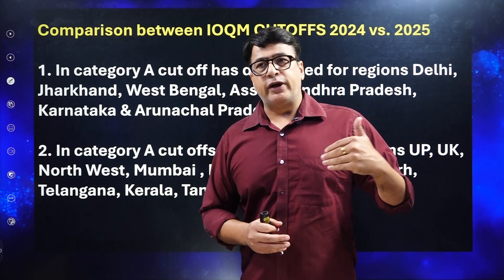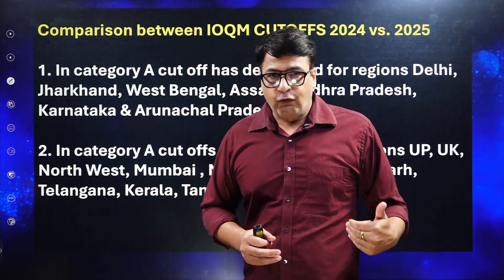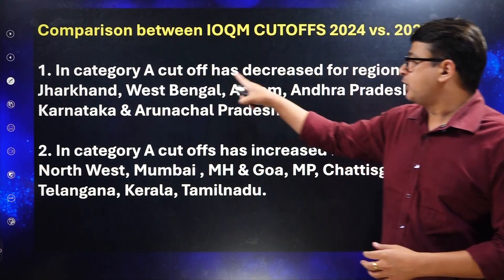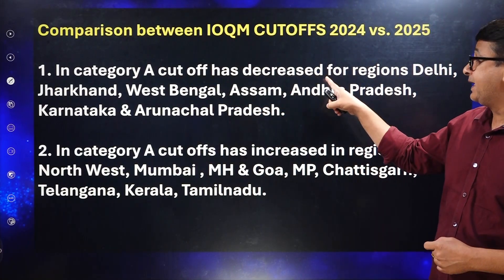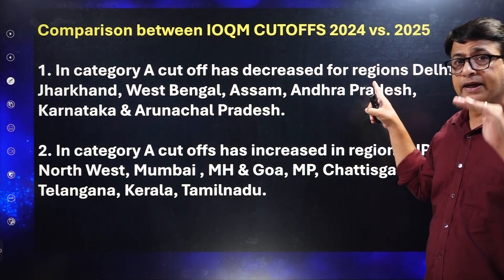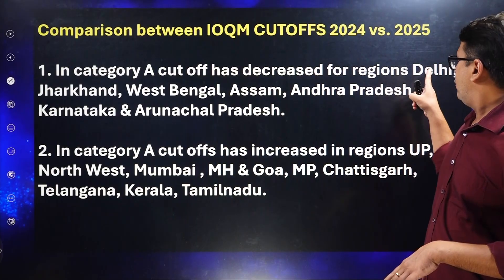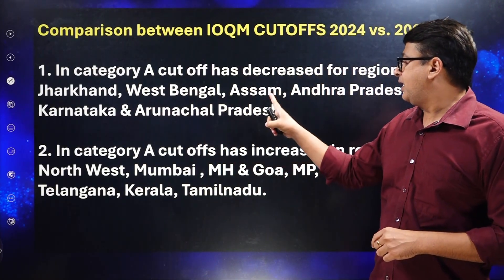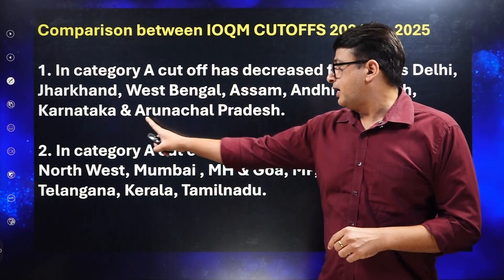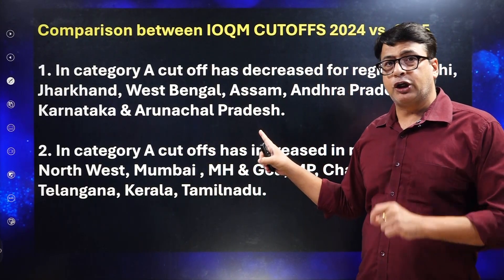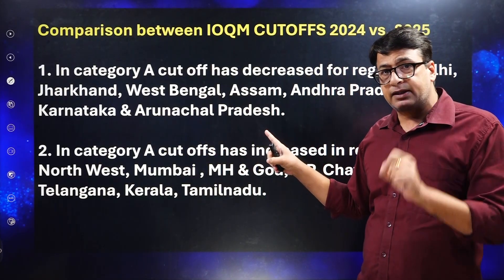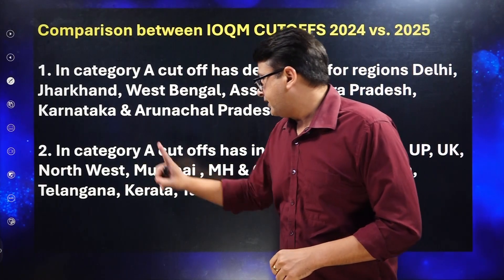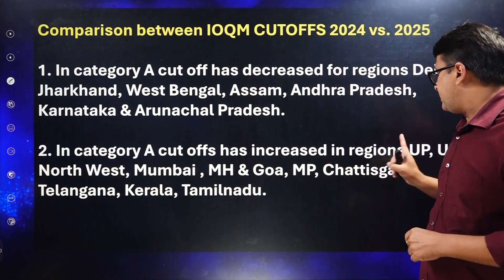Now let's compare the IOQM 2025 cutoff with 2024. In Category A, the cutoff decreased in: Delhi, Jharkhand, West Bengal, Assam, Andhra Pradesh, Karnataka, and Arunachal Pradesh.